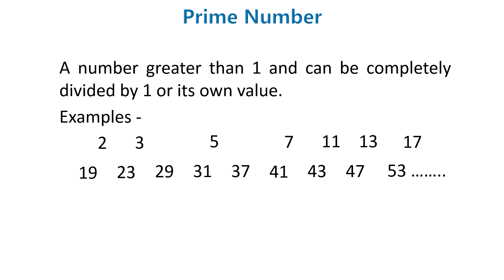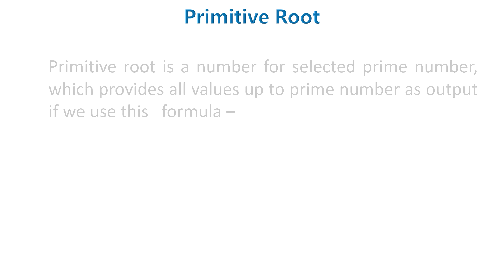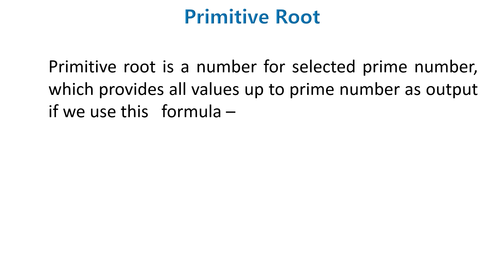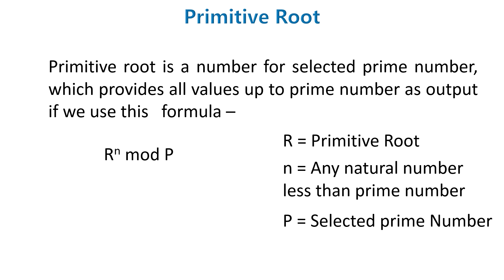Third term is to understand in Diffie Hellman is primitive root. Primitive root is a number for selected prime number which provides all values up to prime number as an output if we use this formula. R raised to the power n mod p where p is selected prime number, r is a primitive root and n is any natural number or non-negative number but less than the prime number itself. To understand more, let me show you a simple calculation.